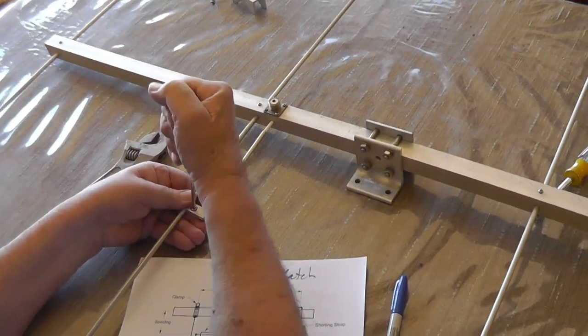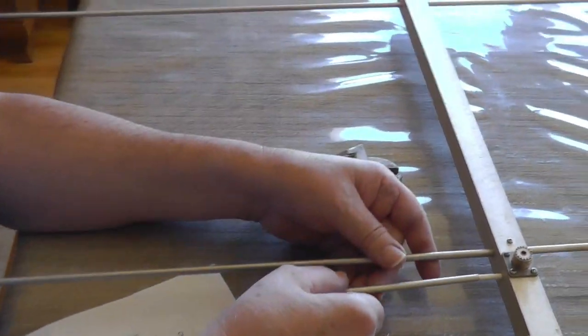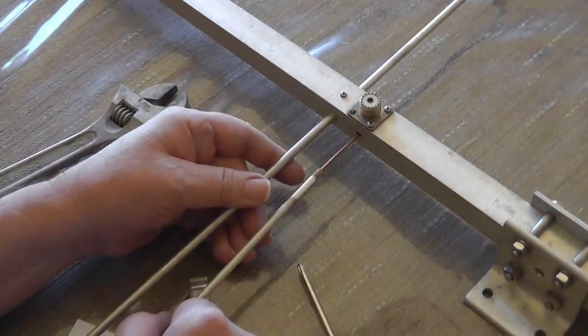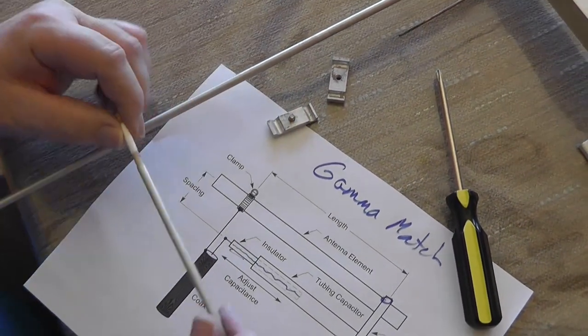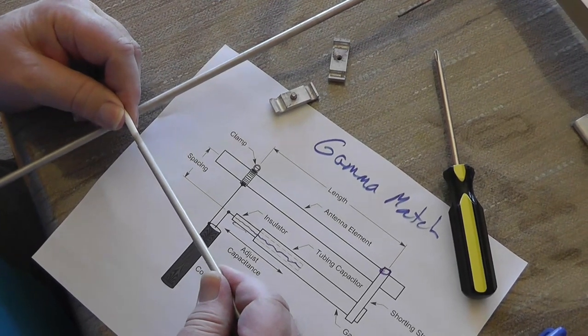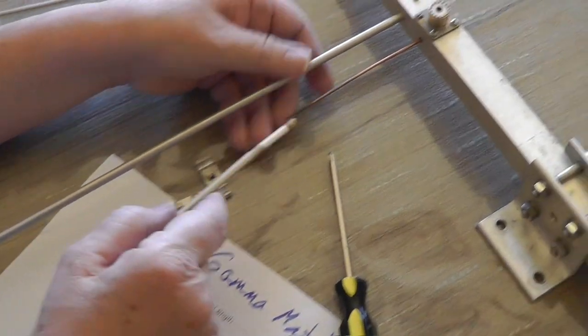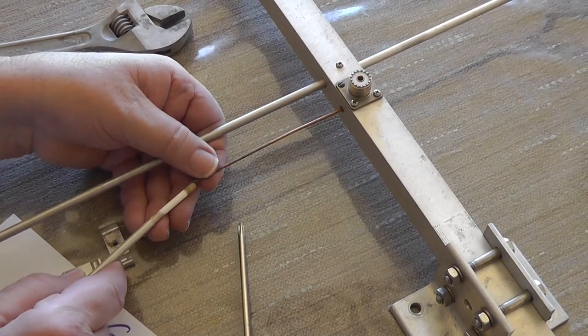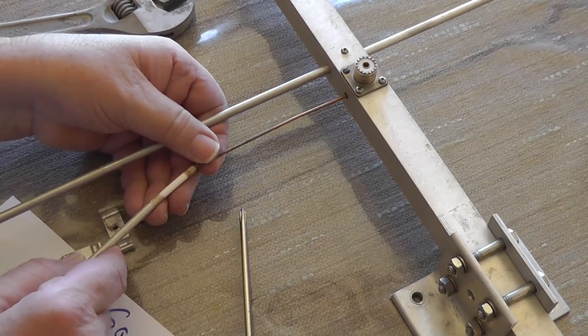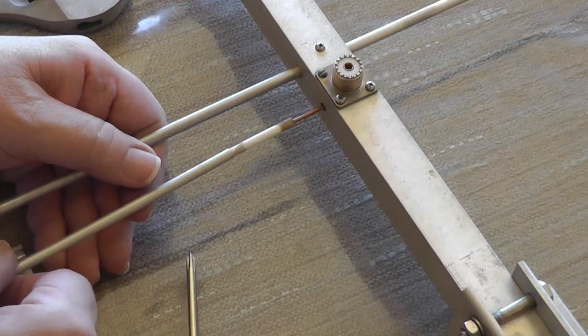I'm going to take this apart. And you can see how the capacitor is formed. There's an insulated part right here. And it goes in and out of this tube. And then this part right here goes through the insulator. And it is going to go back in.